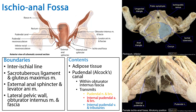So we've discussed the ischioanal fossae — its boundaries, it being a paired space, and its contents — notably adipose connective tissue, the pudendal nerve and branches, the internal pudendal artery and its branches, and the internal pudendal vein and its tributaries, all transmitted through the pudendal canal. Thank you for your time.